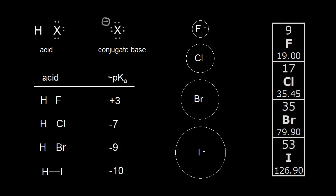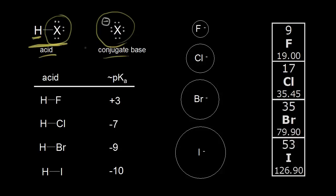Let's say we have a binary acid HX, where X is equal to a halogen — fluorine, chlorine, bromine, or iodine. If HX donates a proton, we're left with the conjugate base X minus. From the previous video, the more stable the conjugate base, the more likely HX is to donate a proton. So the more stable the conjugate base, the stronger the acid.